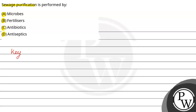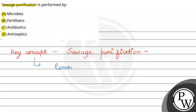So first of all, let us see the key concept, which is understanding sewage purification — sewage purification को understand करना. Sewage purification involves removing contaminants from the wastewater, ताकि उसको हम बना सके safe for discharging into the environment और reuse करने के लिए।